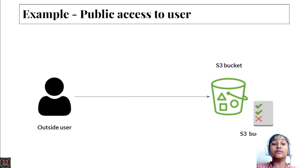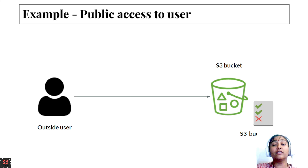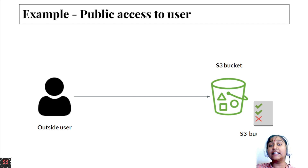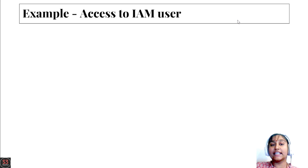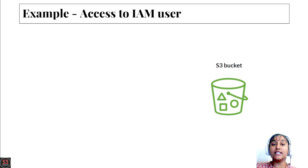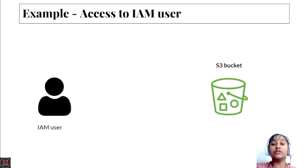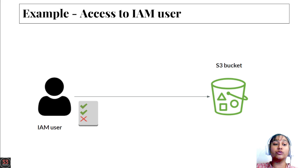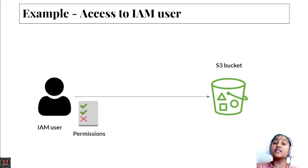We create a bucket policy and attach it to our S3 bucket so the external user can access all the objects. That's the first example for creating a bucket policy. The second example involves an IAM user who wants to access objects uploaded into the S3 bucket, so we need to provide permissions to that IAM user so only they can access the objects.